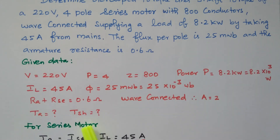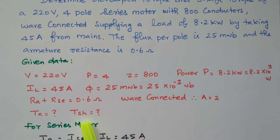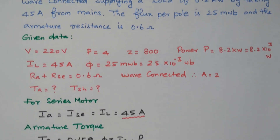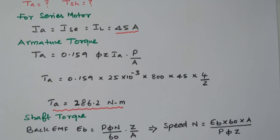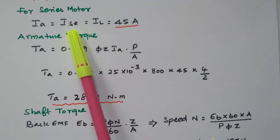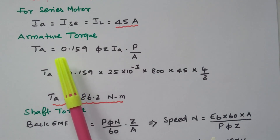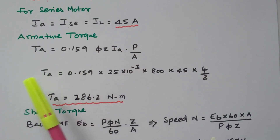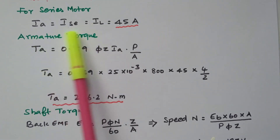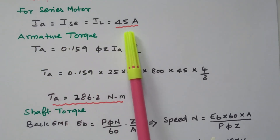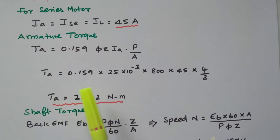We need to find the developed torque, that is the armature torque, as well as the shaft torque. The torque developed in the armature is called armature torque. After some losses, the remaining will be available at the shaft — that is called shaft torque. In a series motor, the armature current IA equals the field current equals the line current IL; all are the same since armature, field, and load are all connected in series. So the current is 45 ampere.